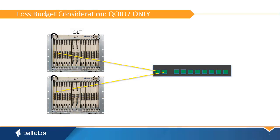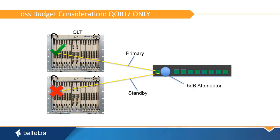It is important to plan carefully for a PON protection installation. There are two key points associated with the optical setup of a protected PON network. First, when using the QOIU7, the system relies on the primary optical link being able to take over control of the PON. This is accomplished by engineering the optical network such that the primary PON signal is 5 dB above that of the secondary PON signal. This allows the primary PON to drive the signal and take control. The typical way to accomplish this is via insertion of a 5 dB pad in the standby PON optical path.